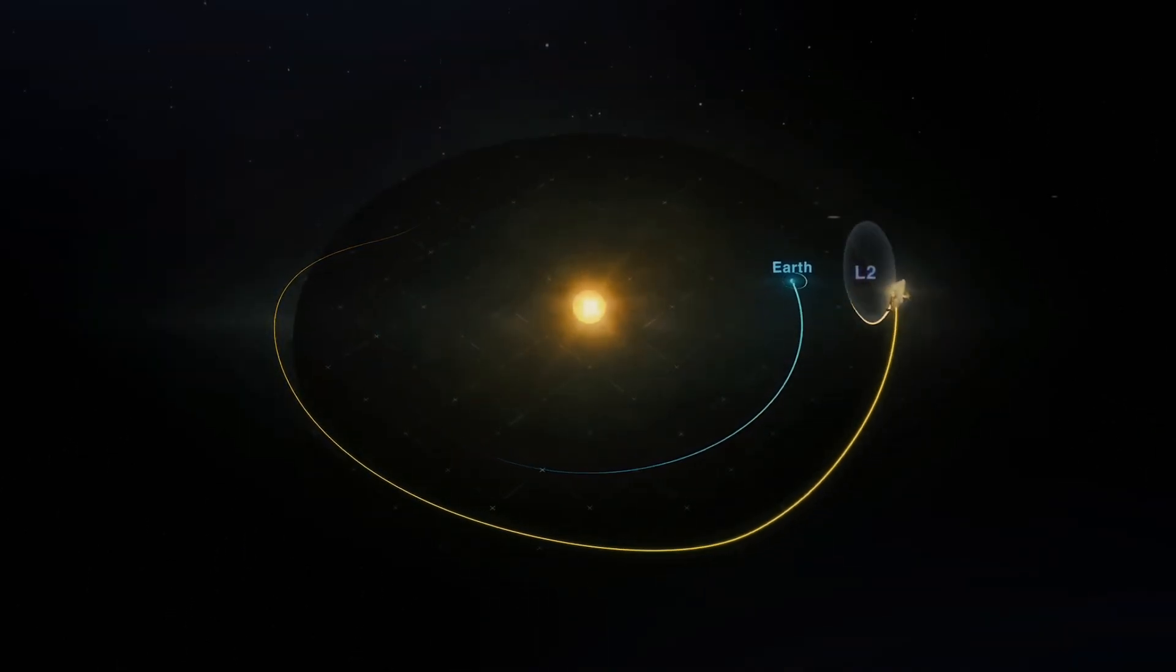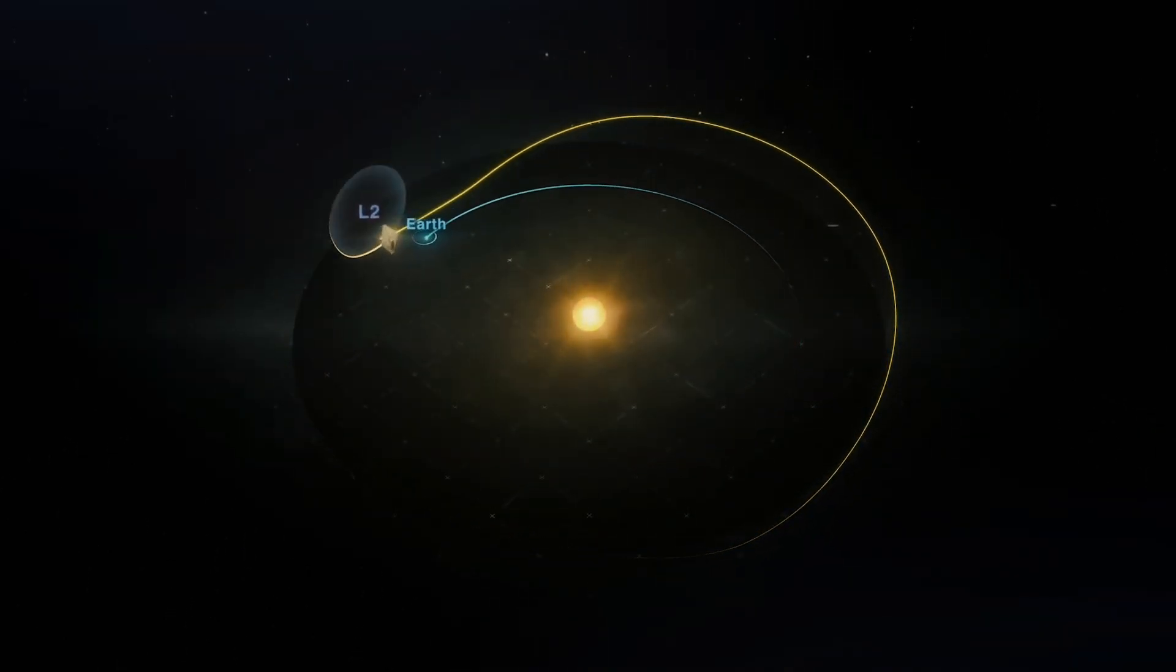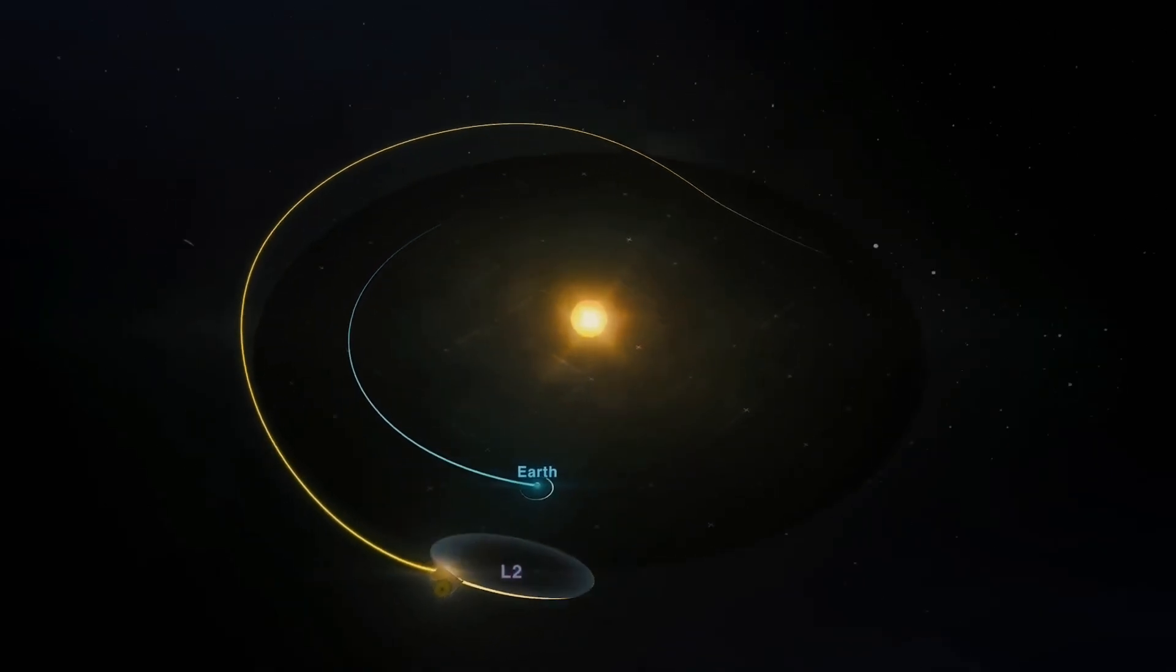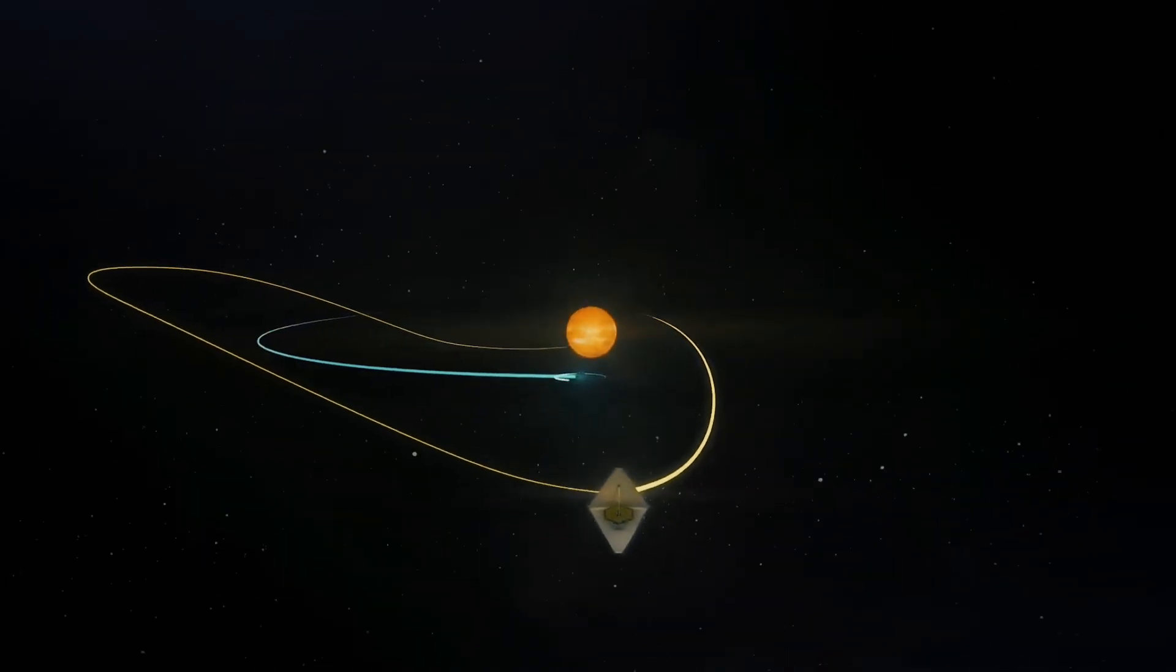In fact, while some points in space are stable, others are chaotic. This brings us to an interesting phenomenon in celestial mechanics, chaos theory.